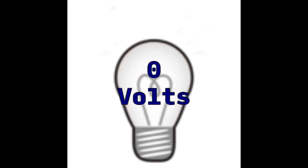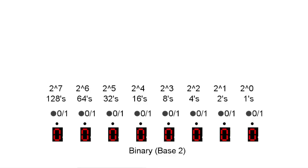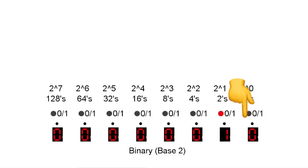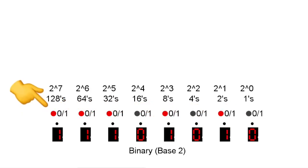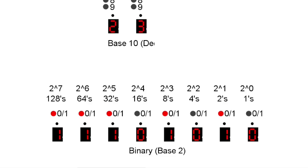Electronic signals are most stable when existing in one of two distinct states, so it is little wonder that engineers chose base 2, or binary, for reliable electronic calculations. Starting with 1 bit being 0, adding 1 gives 1. Adding 1 to 1 causes an immediate rollover to 0 with a 1 carried to the 2's column. An 8-bit base 2 number such as 11101010 can be described as 1×128 + 1×64 + 1×32 + 1×8 + 1×2, which again totals 234 in base 10. As the base gets smaller, the number of columns needed to represent the same value increases. Three digits in base 10 take at least 8 bits in base 2, and the maximum value in 8 binary bits is 255, giving 256 possible values including 0.